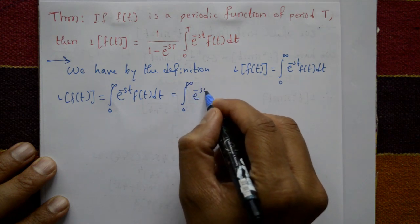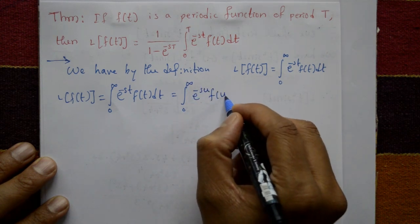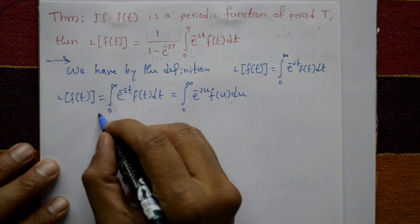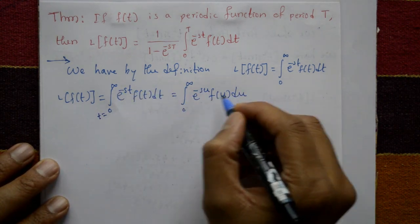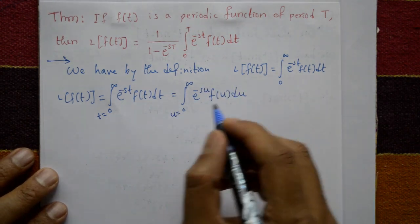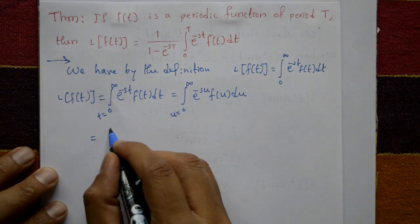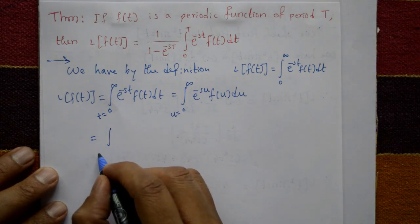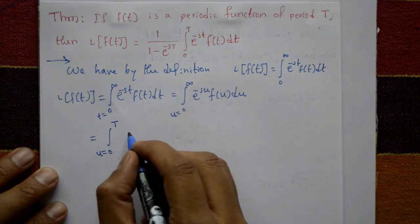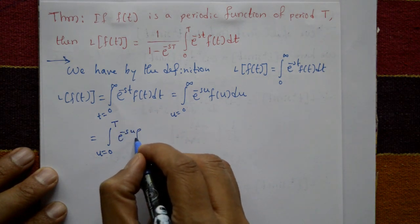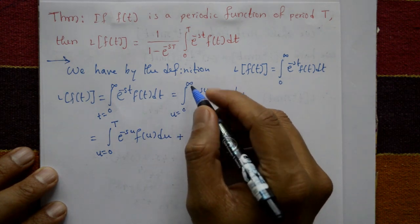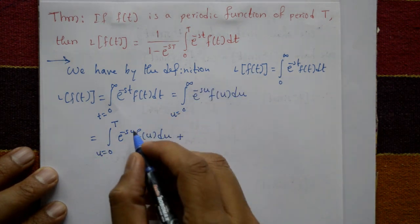We change the variable: t becomes u, so this equals the integration of u from 0 to infinity of e raised to minus su times f(u) with respect to u. Now we split the integral from 0 to infinity into parts: first, u from 0 to T of e raised to minus su times f(u) du, plus the next interval.